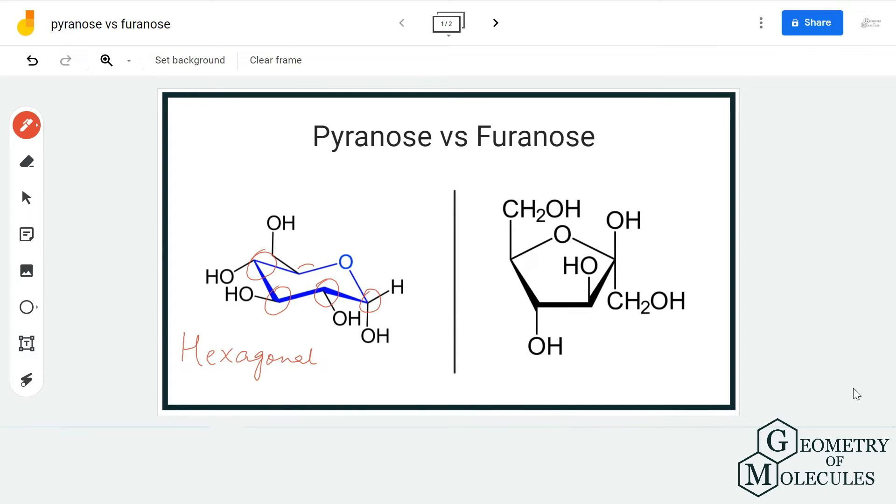It has a hexagonal structure with five carbon atoms and one oxygen atom. This ring structure is present in the most commonly used sugar, which is glucose. So glucose will have this pyranose ring.